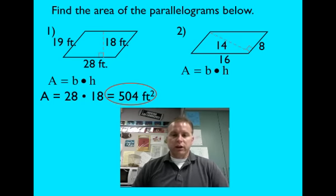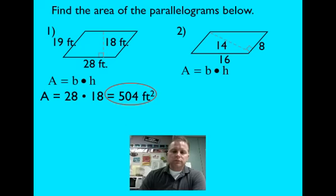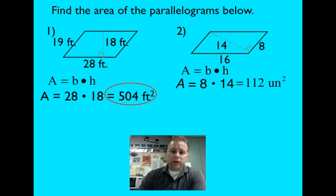Okay, so area is equal to base times height. So we have A is equal to 8 times 14, which is equal to 112 units squared. Notice that I said units because I don't know if it's feet, centimeters, millimeters, miles, who knows. So I put units to show that it is area.